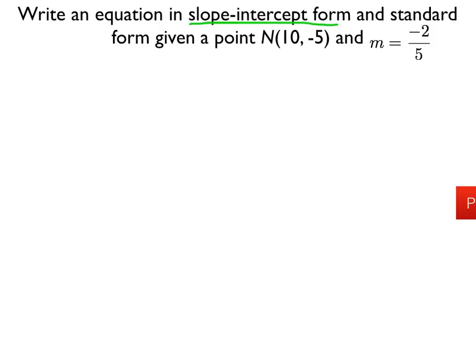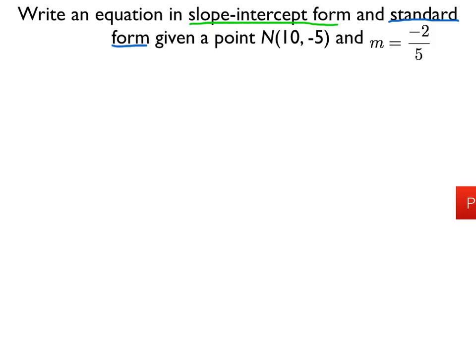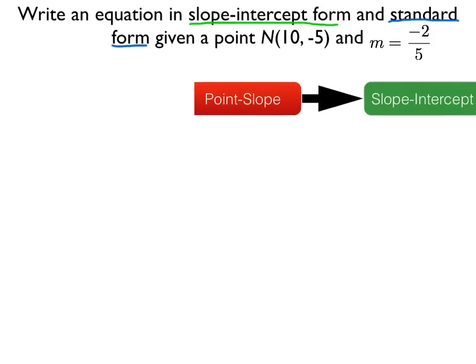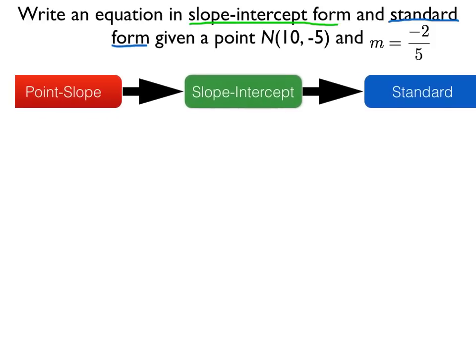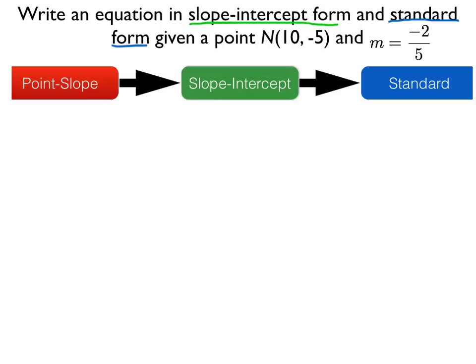We're going to find the slope-intercept form first, and then using that, we'll get the standard form. But before slope-intercept, we actually want to find the point-slope form. So point-slope form is where we're going to start. We'll use point-slope form to find slope-intercept, and then we'll get standard form.